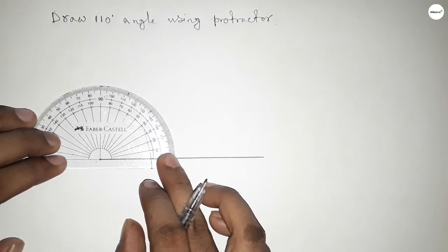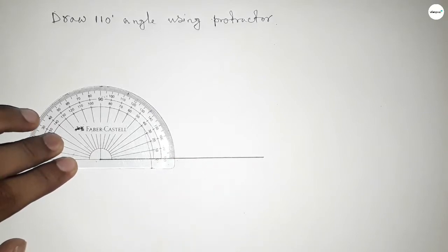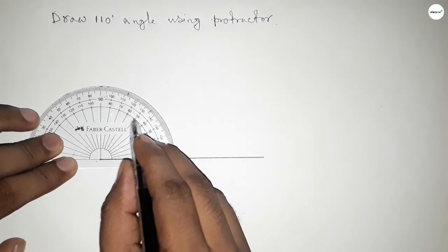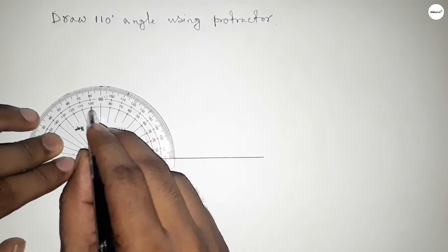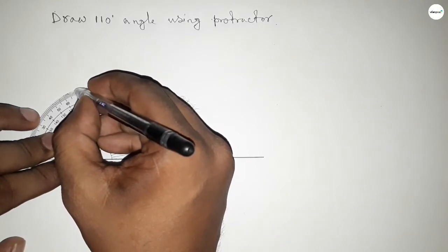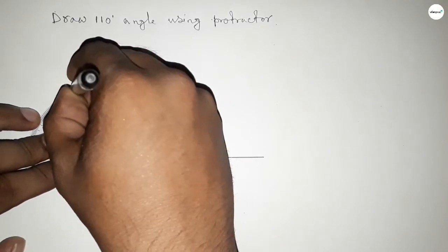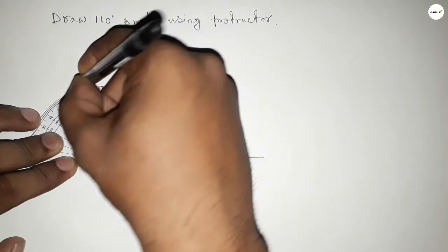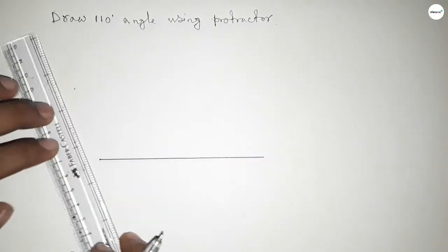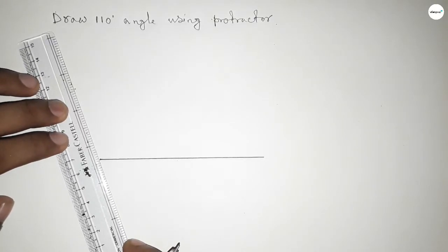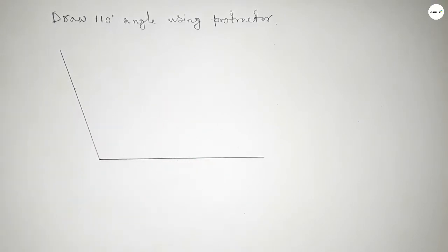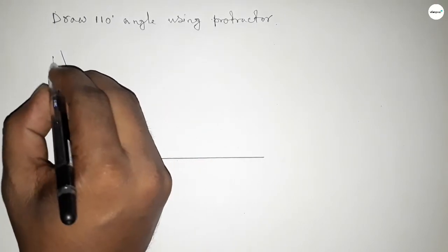Now count the angle: 0, 10, 20, 30, 40, 50, 60, 70, 80, 90, 100, and this is 110 degrees. Now join this to get 110 degrees. So we got a 110 degree angle by joining this.